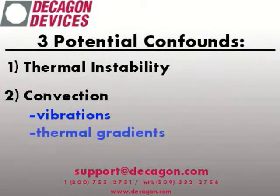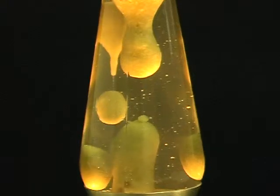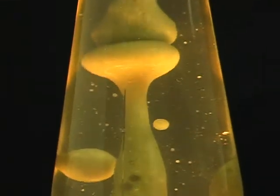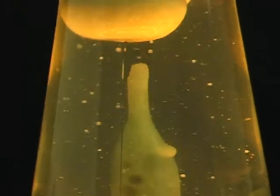Another minute source of convection comes from thermal gradients in the fluid. Warmer fluid has lower density, so it tends to rise while the cooler fluid sinks. This again makes it imperative that the sample be isothermal.